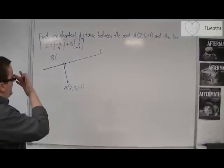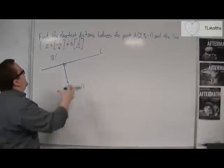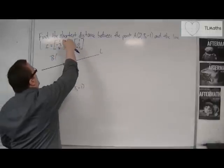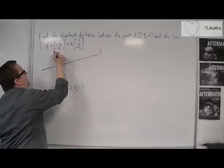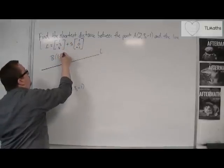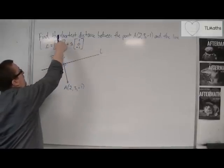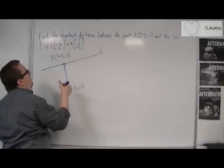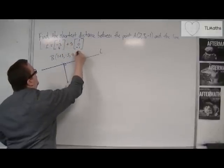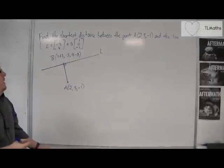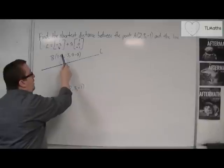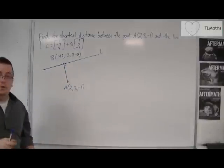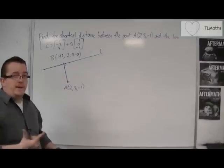Because B lies on the line, you can say it has the coordinates given by the line: 1 plus 1λ for the top row, minus 3 plus 0λ for the middle row, and 4 minus 1λ for the bottom row. So there is a point B where some value of lambda will give me the point closest to A.